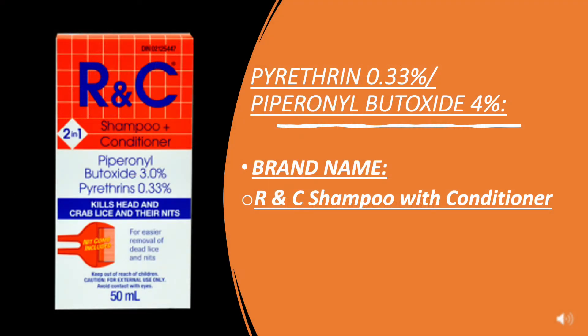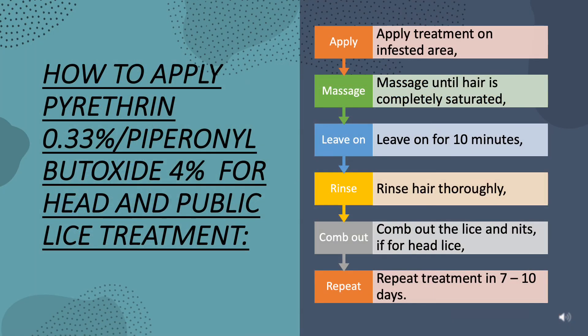Pyrethrin 0.33% with Piperonyl butoxide 4%, brand name RID shampoo with conditioner. How to apply for head and pubic lice treatment: apply treatment on the infested area and massage until hair is completely saturated. Leave on for 10 minutes, then rinse hair thoroughly. Comb out the lice and nits. If for head lice, repeat treatment in 7 to 10 days.